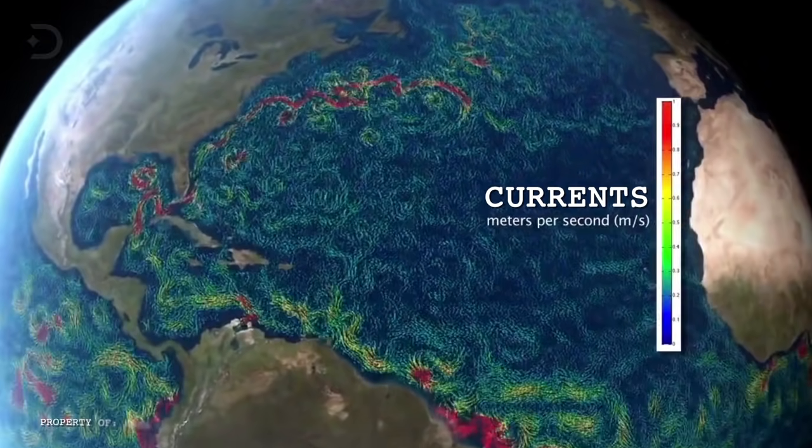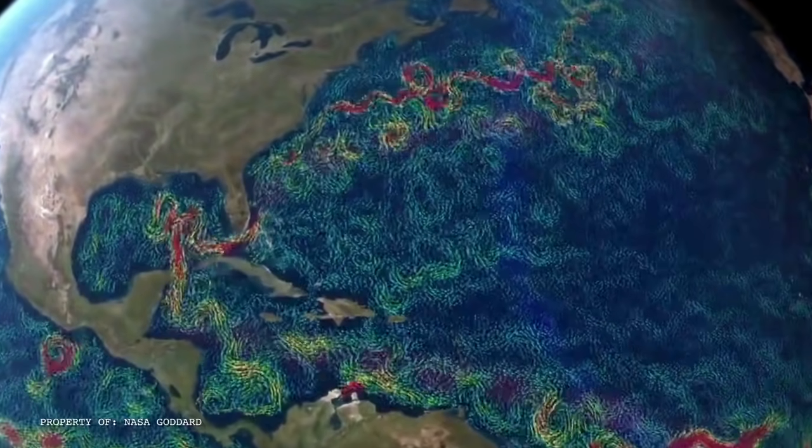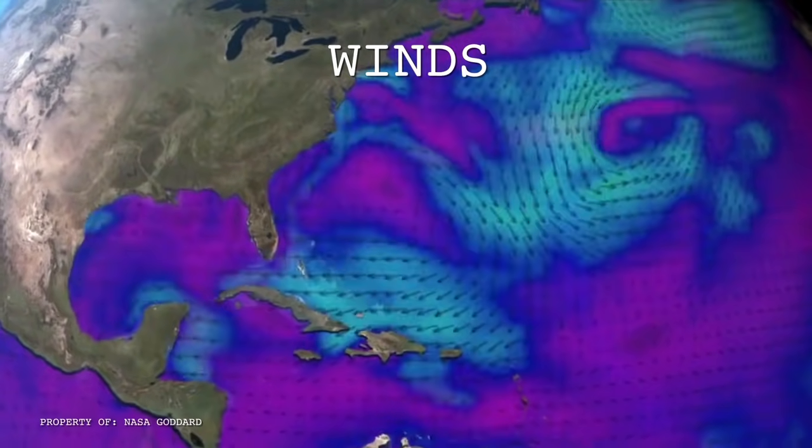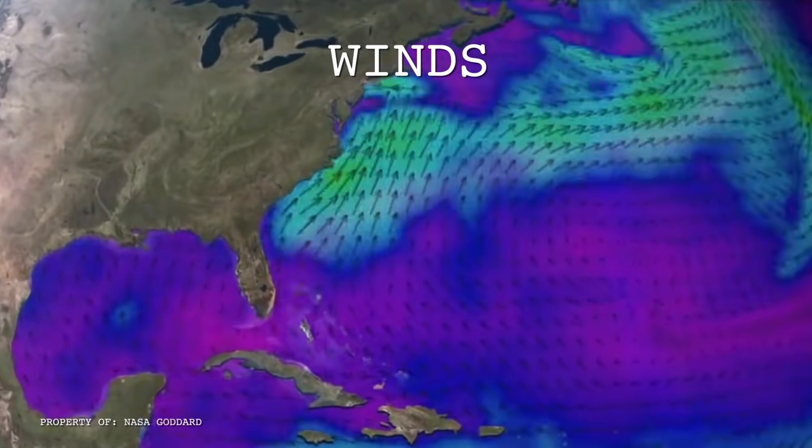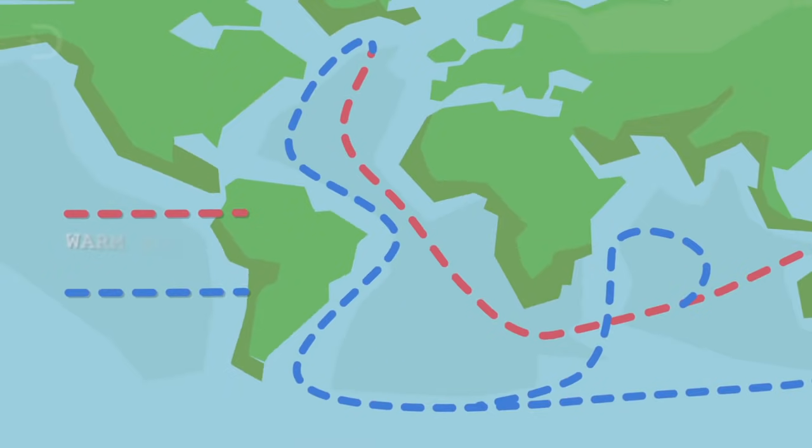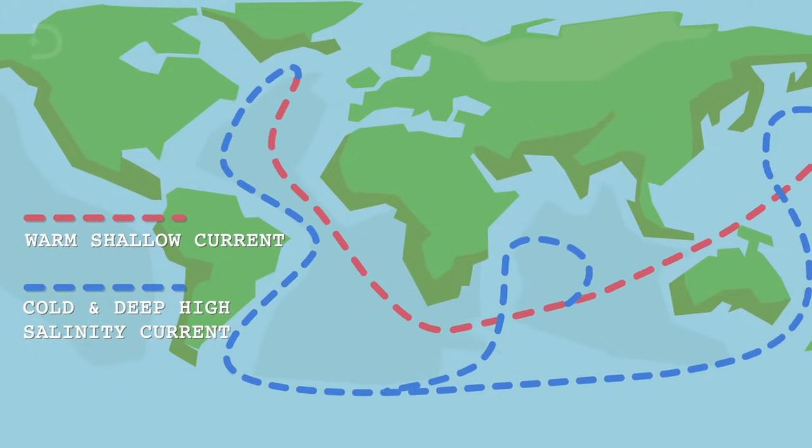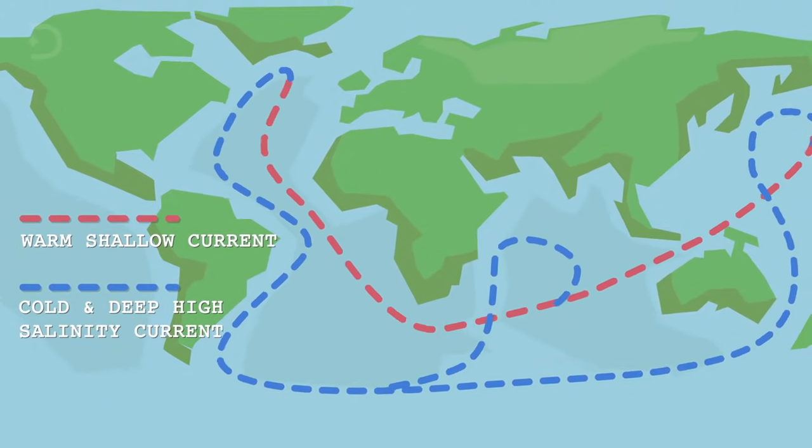That sea ice also influences the ocean's currents, which have a big effect on our weather. The reason is that oceans and air act like heat engines, which move heat to the poles in a constant quest for balance. Ocean currents move this warmer water along what you would call a global conveyor belt in a process known as thermohaline circulation.